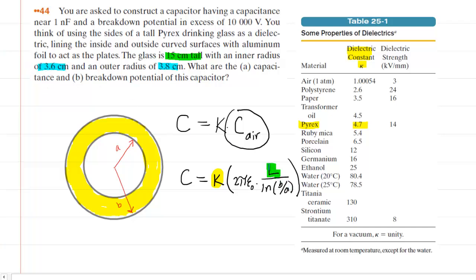We will have to convert the length from centimeters to meters. We don't have to convert the radii because when we divide them, their units cancel anyways. We'll go ahead and begin to plug in the known values. Kappa is 4.7 for Pyrex glass multiplied by 2π.